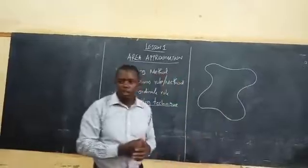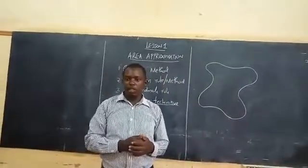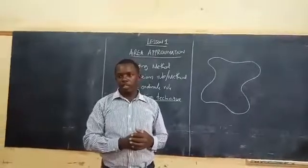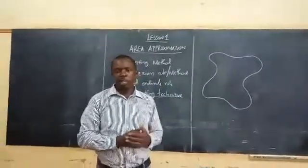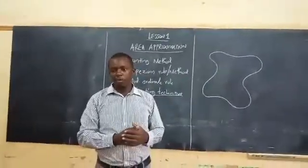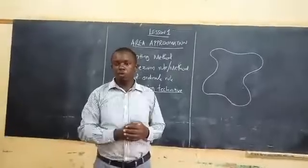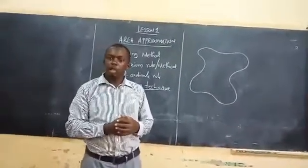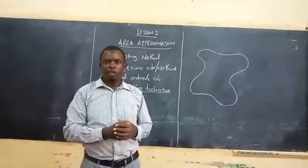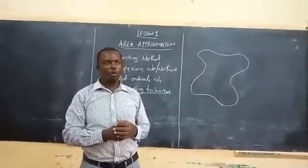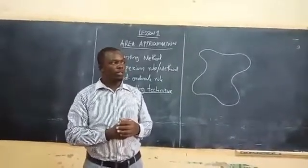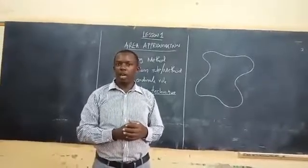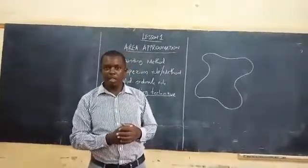I will draw something to represent an irregularly shaped object. That is an irregularly shaped object. We may not be able to get this area by using a formula, but we can be able to use the counting method or counting technique to get this area. So the first thing we are going to do is to subdivide the area it is covering into squares measuring one centimeter each.